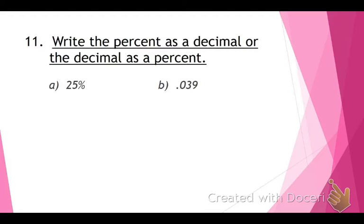Last problem of the day, number 11. Write the percent as a decimal or the decimal as a percent. So the first one, I have a percent, but I want you guys to give it to me as a decimal. What is 25% as a decimal? 0.25. Great job. Just remember, your decimal point's at the end. You just move it over two places right there. You get 0.25. The next one, I've given you a decimal. 0.039. How do I get that to be a percent? Move it two places to the right, and what do you get? 3.9%.